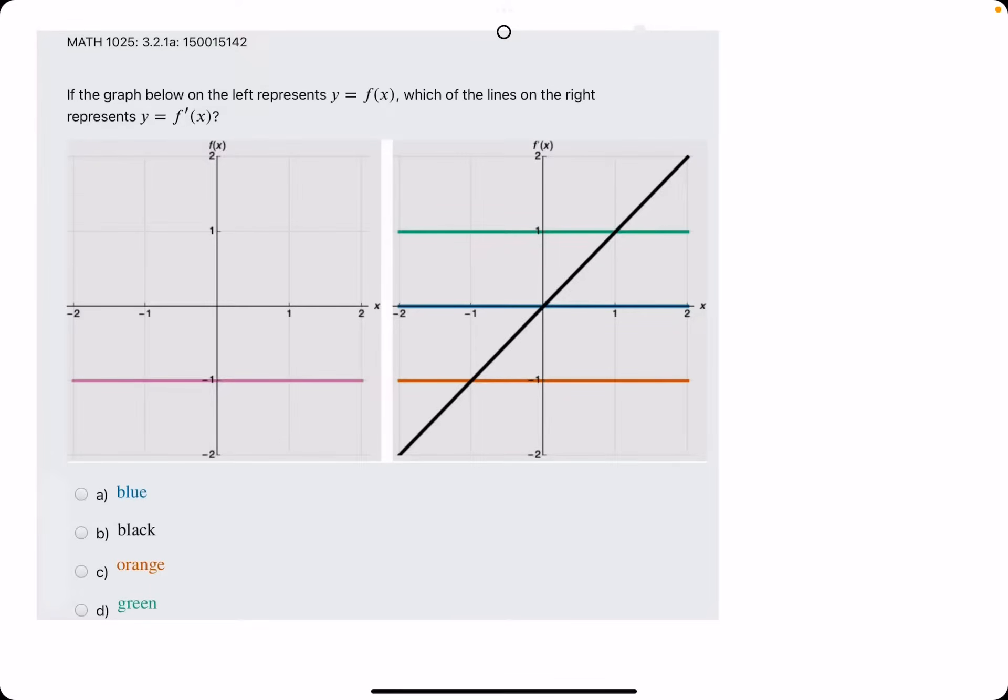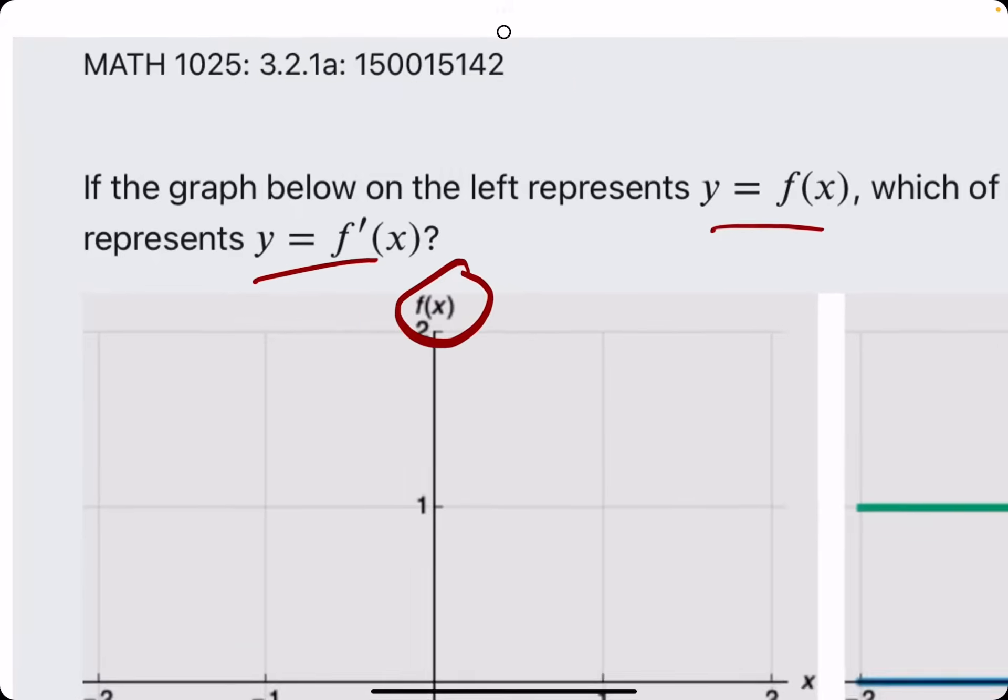In this problem, they give us a graph on the left for f(x), and they ask which of the lines on the right represent y equals f prime of x.